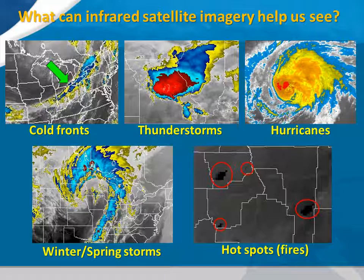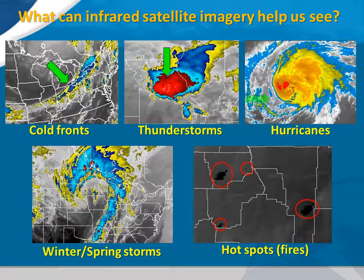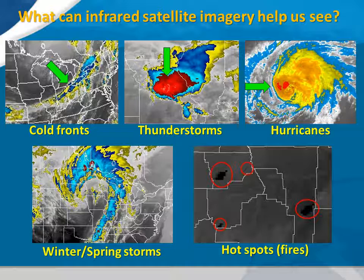A cluster of thunderstorms with its very cold cloud tops shows up nicely in the top middle image, while hurricanes appear as bright, swirling masses of clouds, which we see in the top right image. In the bottom left image, we see a strong winter storm. The brighter clouds form a comma shape, which is quite typical with a strong winter or spring storm as clouds wrap around an area of lower pressure. In the bottom right image, large forest fires appear as dark hot spots, which are circled in red.